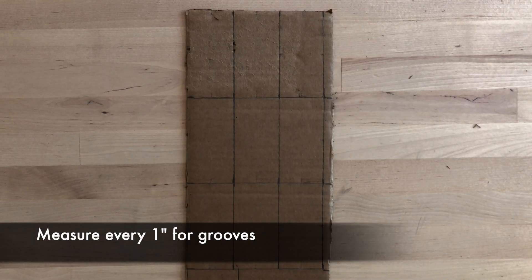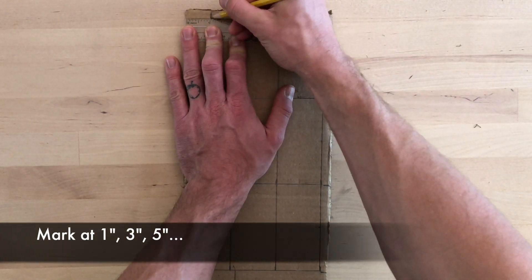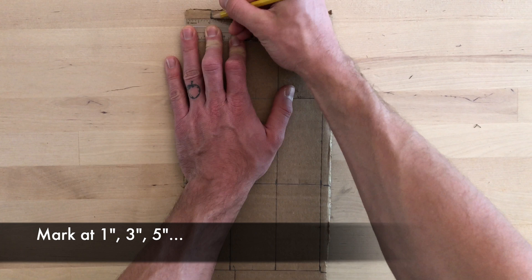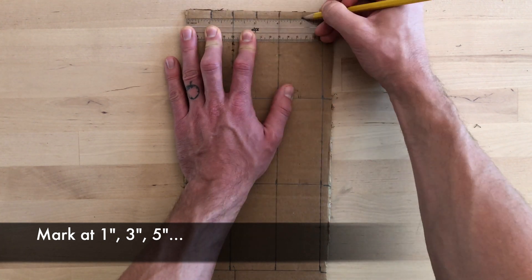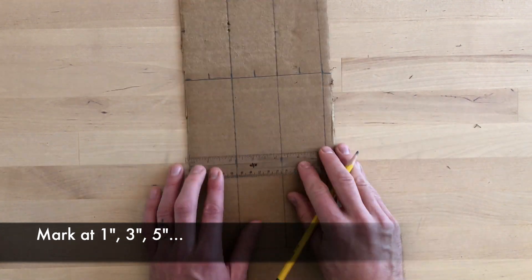Now it's time to measure every one inch for the grooves. Keep your ruler in place and measure at one, three, and five, skipping over your two inch marks. Slide your ruler down and repeat.